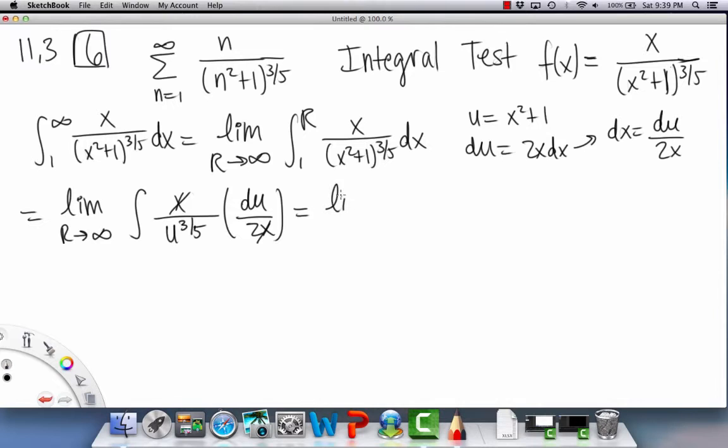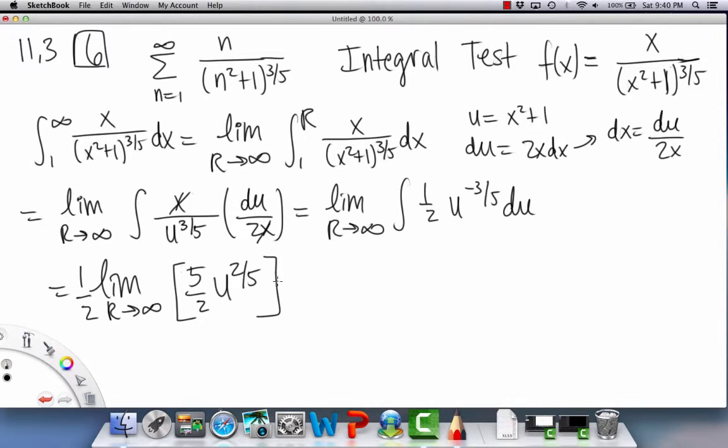And we're left with limit, as r goes to infinity, of 1 half. And then u to the negative 3 over 5 du. Okay. So then, from here we have, we're going to get, I'm going to bring this 1 over 2 outside. So, I'll put that in front. Technically, you can go all the way in front of the limit. So yeah. And then, with this u, I'm going to integrate it. So then we get a positive 2 over 5 as the power. So we need a 5 over 2 in front to compensate. Right?